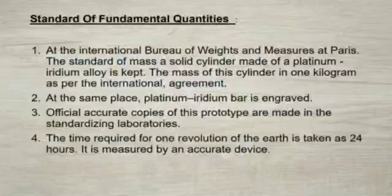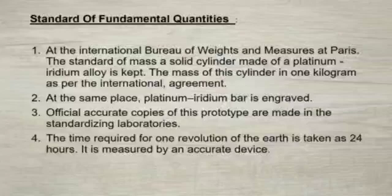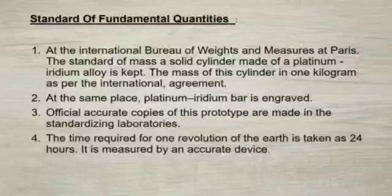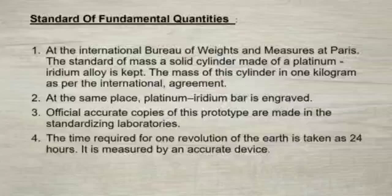Now let's know about the standards of the fundamental quantities. As the standard of mass, a solid cylinder made of a platinum-iridium alloy is kept in the International Bureau of Weights and Measures at Paris. As per the international agreement, this mass is called one kilogram. Official accurate copies of this prototype are kept in centralizing laboratories all over the world. Two fine lines are engraved on a platinum-iridium bar, also kept at the International Bureau of Weights and Measures at Paris. The distance between these two lines is accepted as the standard meter. Accurate copies of this prototype are distributed to centralizing laboratories all over the world.